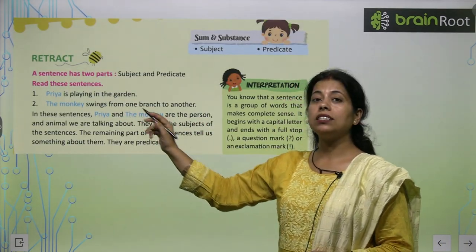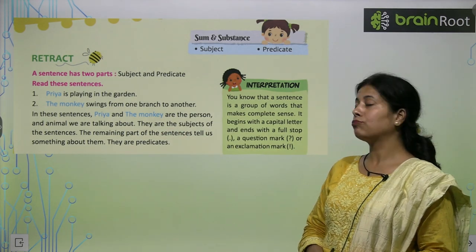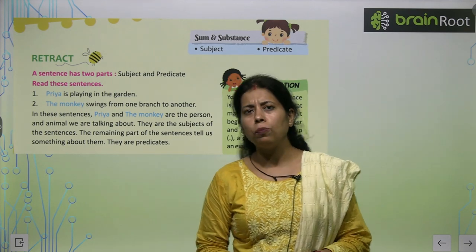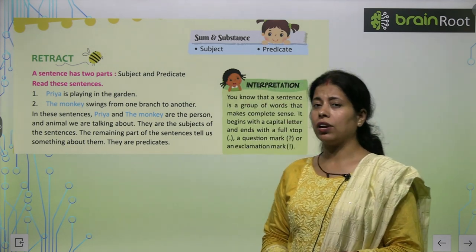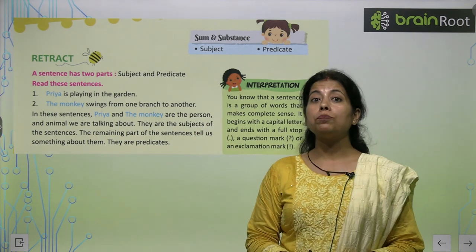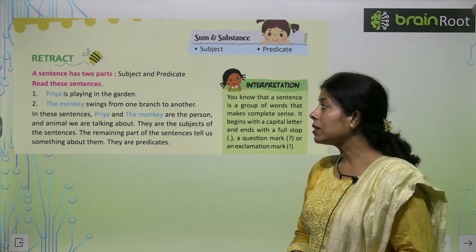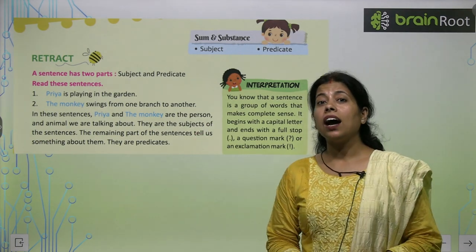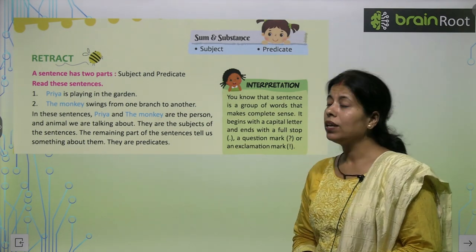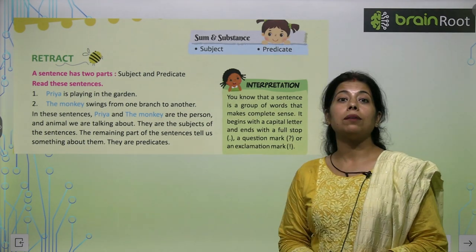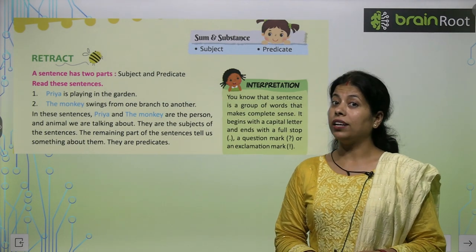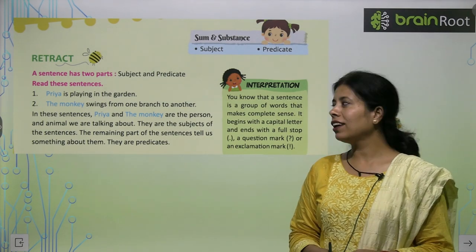A sentence has two parts: subject and predicate. Her sentence ke doh parts hote hai friends. The first one is subject and the other one is predicate. Kaise pata chalega ki kya subject hai aur kya predicate hai? Bada simple hai. Subject — jiske baare mein baat ho rahi hai. Or predicate — joh baat ho rahi hai.